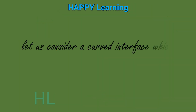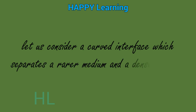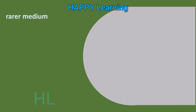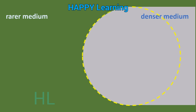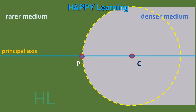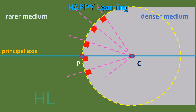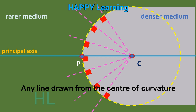Let us consider a curved interface which separates a rarer medium and a denser medium. The sphere that covers the curved surface and the center C will be the center of curvature of the curved surface, and the midpoint of the curved surface is the pole. The line joining C and P is the principal axis. Any line drawn from the center of curvature onto the curved surface will be the radius of the sphere, hence it will be perpendicular to the curved surface.